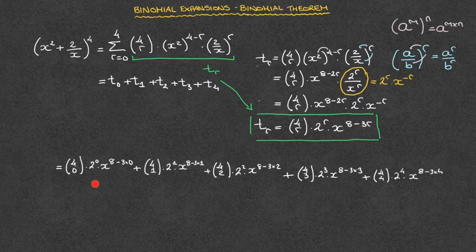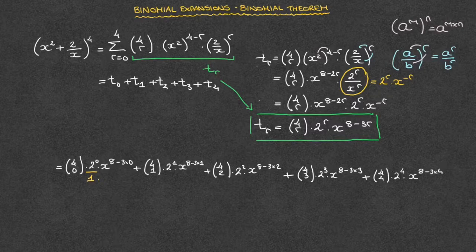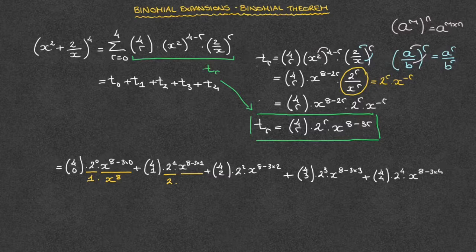We've now written all of the terms in our expansion. But we can't stop there — we have to simplify each of these as much as possible. Let's calculate each of the powers of 2 and of x in all of the terms. In the first term, 2 to the power of 0 is just equal to 1, and that multiplies x raised to the power of 8 minus 3 times 0, which is 8 minus 0. In other words, that's x raised to the power of 8. In the second term, we have 2 to the power of 1, which is just 2, times x raised to the power of 8 minus 3 times 1, which is x to the power of 8 minus 3, so x raised to the power of 5.